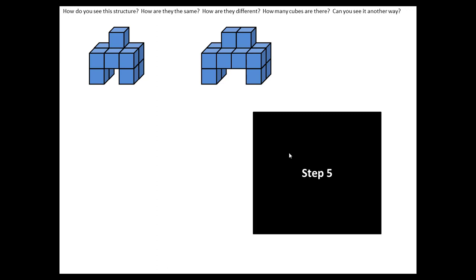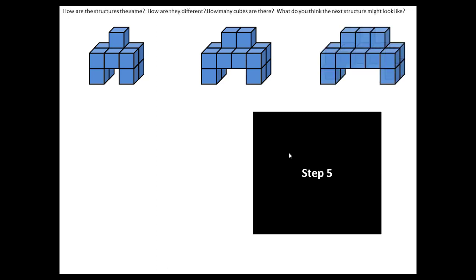When you click again, the third structure will appear like this. And again, the questions on the top changed. These questions are, how are the structures the same, how are they different, and then how many cubes are there?